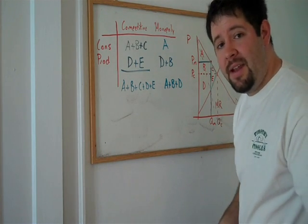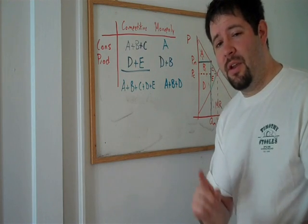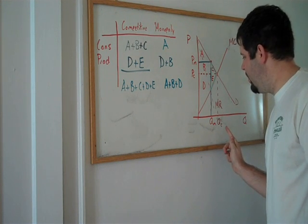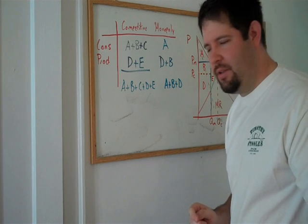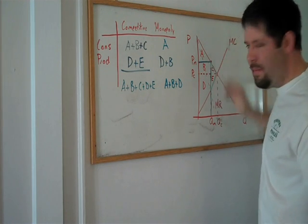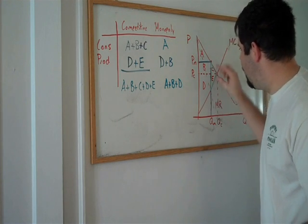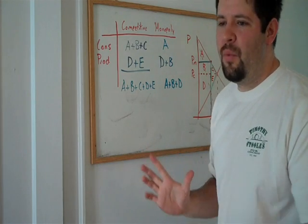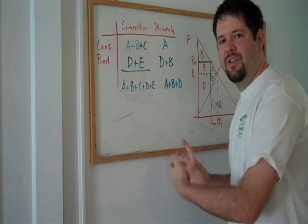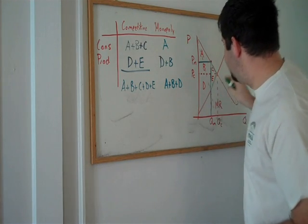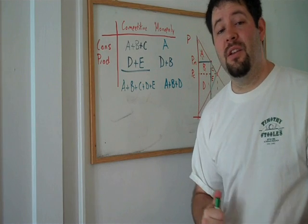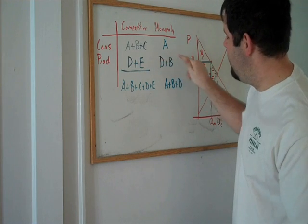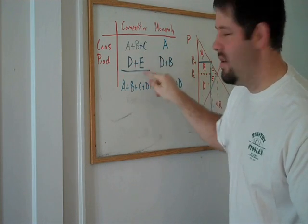And it is a deadweight loss because there are units that go untraded, namely the units of quantity between QM and QC, for which the marginal cost of producing those units is less than the marginal willingness to pay as represented by the demand curve. So what we'll see is that there's a deadweight loss to the monopoly. But this is a deadweight loss that arises out of individually maximizing behavior. This deadweight loss is a loss to society that no one gets. And society gets this deadweight loss because the monopoly prefers area D plus B to area D plus E.